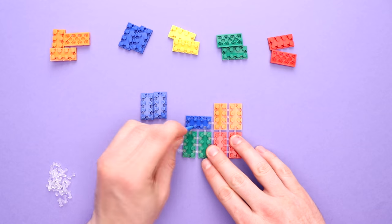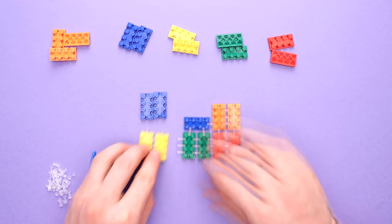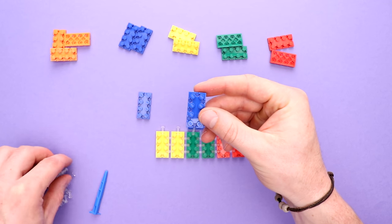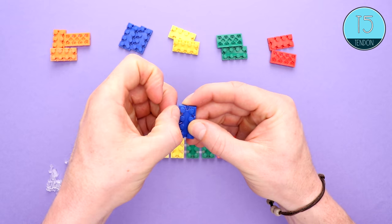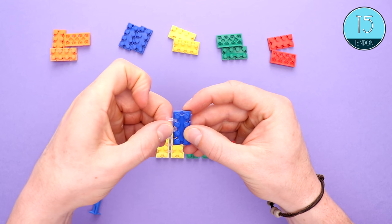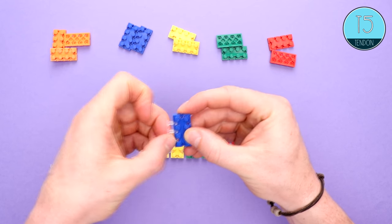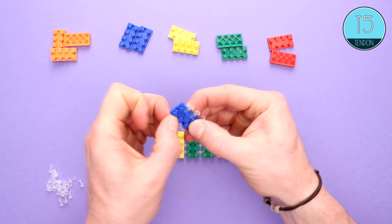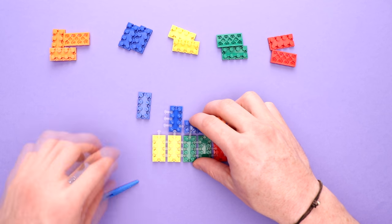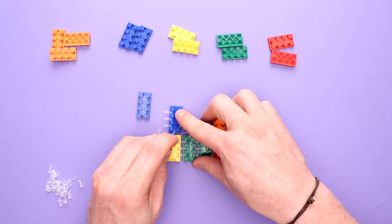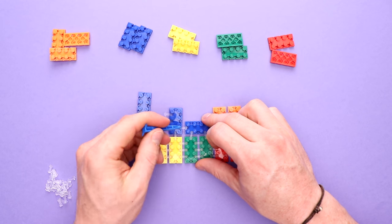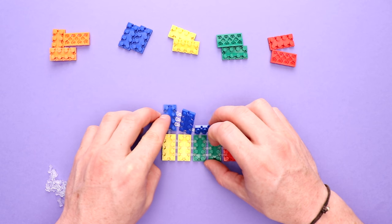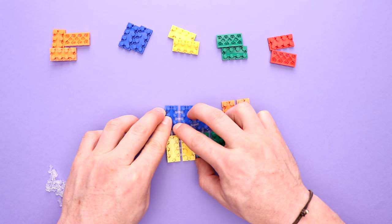Now as you can see, all the parts are starting to come together and we're getting one side of our handbag. So we'll keep putting those T5 tendons in and connecting all the bricks up.